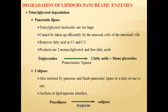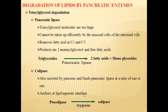Apart from pancreatic lipase, colipase enzyme is also secreted by the pancreas. This colipase enzyme binds to pancreatic lipase at a ratio of 1 to 1. Colipase anchors the lipase at the lipid-aqueous interface. Colipase is secreted in pro-colipase form, which is inactive. The trypsin enzyme activates pro-colipase into active colipase, which then enters the lipid-aqueous interface to anchor pancreatic lipase.